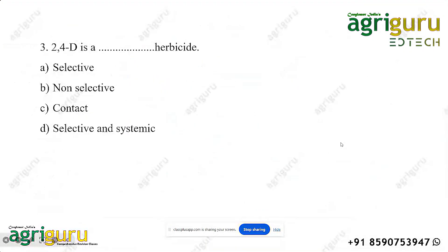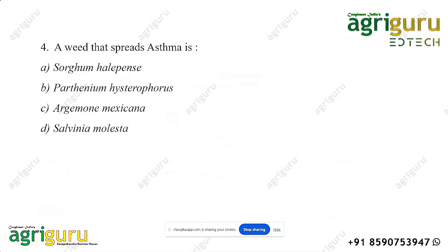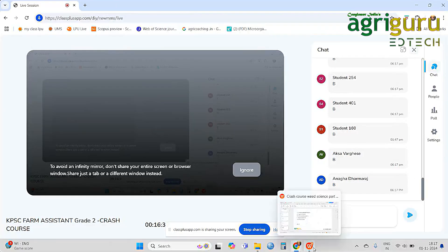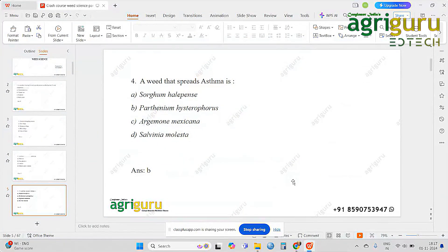Another question: which weed spreads asthma? The options are Sorghum halepense, Parthenium hysterophorus, Argemone mexicana, and Salvinia molesta. The answer is Parthenium hysterophorus. Its common names include carrot grass and congress grass.